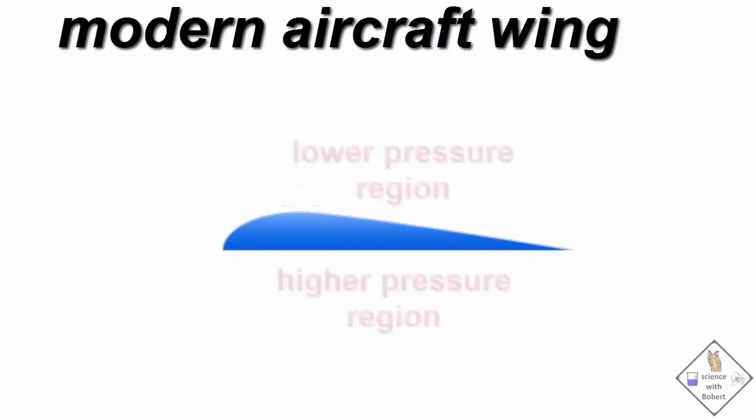So a curved wing generates a pressure difference between the top and bottom of the wing, generating lift.